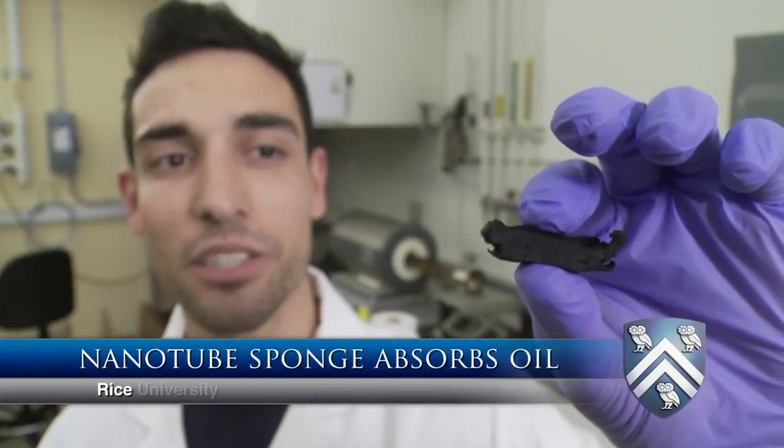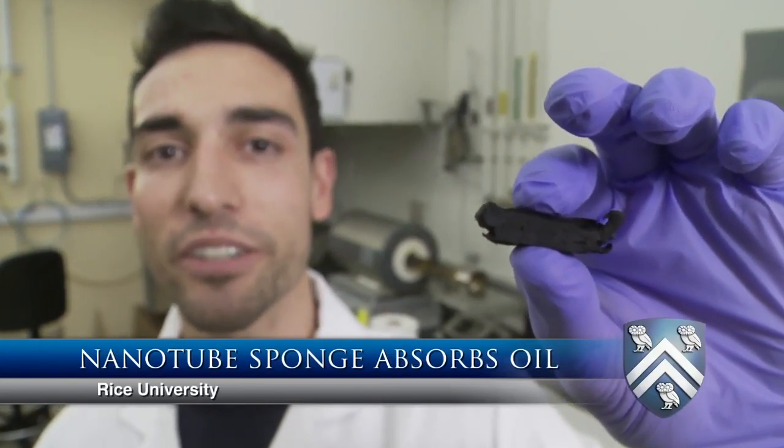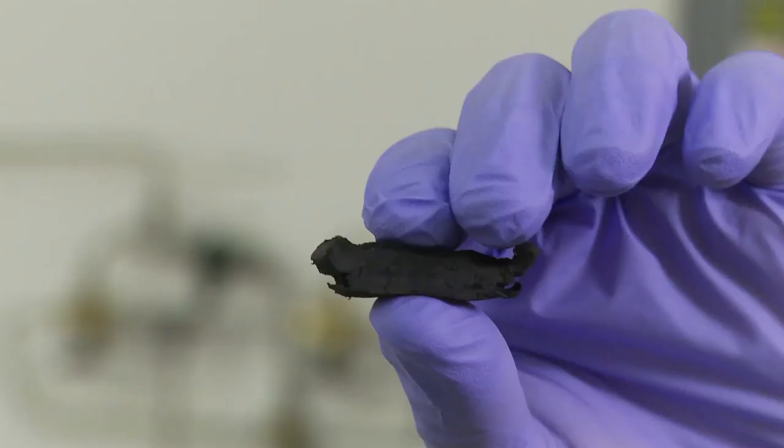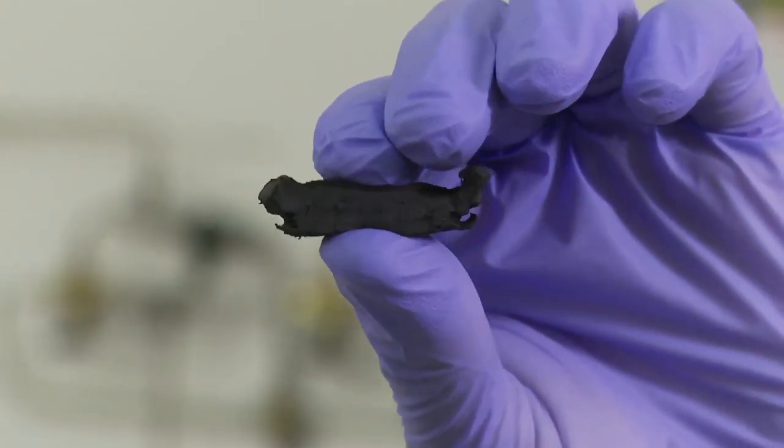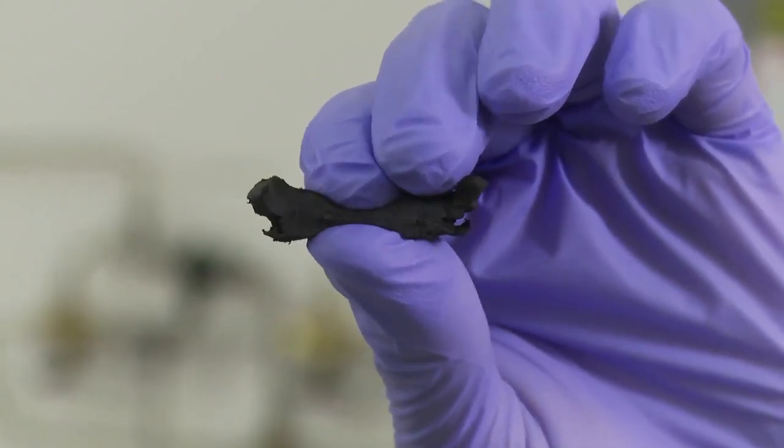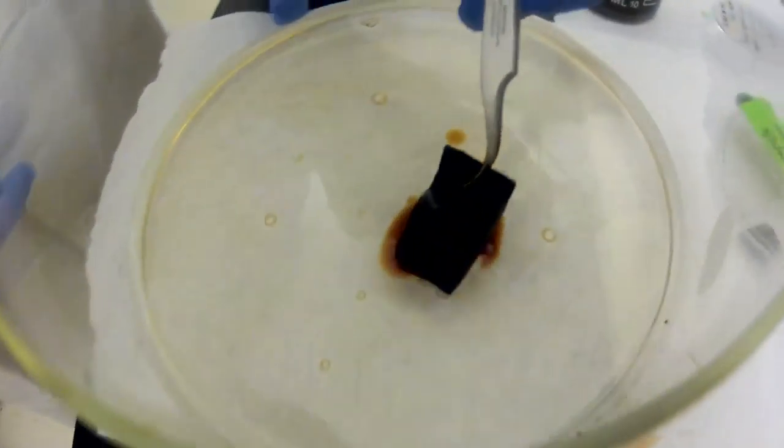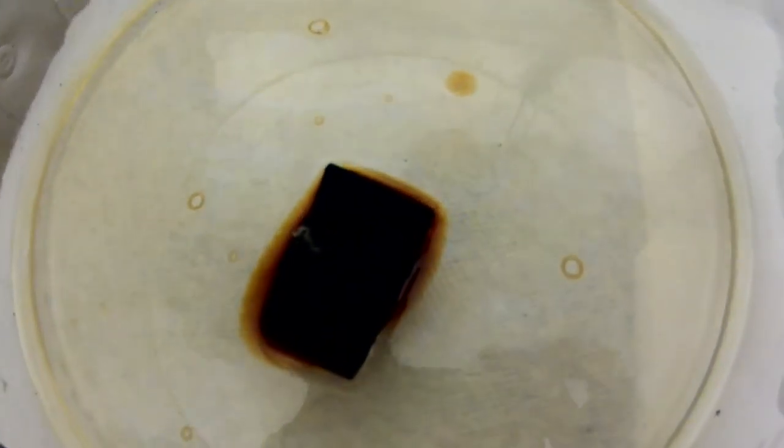Here in my hand is a three-dimensional carbon nanotube sponge material. It's an interesting material because it's elastic, compressible, and flexible, very lightweight but super hydrophobic, which means it hates water but is oleophilic—it loves oil—and it could be used for environmental oil spill applications.